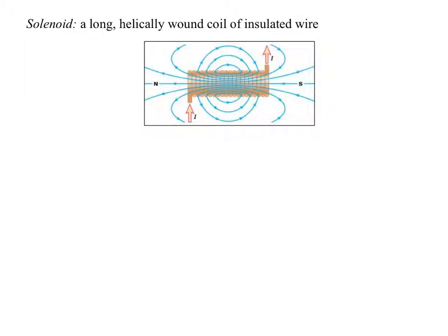There are some important facts to jot down. First: as the current increases, the magnetic field strength increases. You supply more current, you get a stronger magnet. You're taking electricity and getting magnetism out of it. Second: the magnetic field gets stronger as there are more coils per unit length. So if the current goes up, it gets stronger; if the number of loops goes up, it gets stronger.